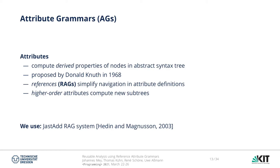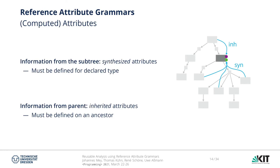Attribute grammars enrich a syntax tree with derived attributes, which are computed using attribute equations. This approach was already proposed by Donald Knuth in 1968, and since then several extensions have been proposed. One extension we use are reference attribute grammars, which allow attribute values to be references to other nodes in the AST. We also use higher-order attributes, which are attributes that compute new subtrees of the AST. For the implementation, we use the JastAdd reference attribute grammar system, which is a Java-based system that uses aspect-oriented programming to weave attribute equations as Java code into a Java AST class structure. There are two basic types of attributes: synthesized and inherited. Synthesized attribute equations take information from the sub-tree, while inherited attributes propagate information down from the parent.